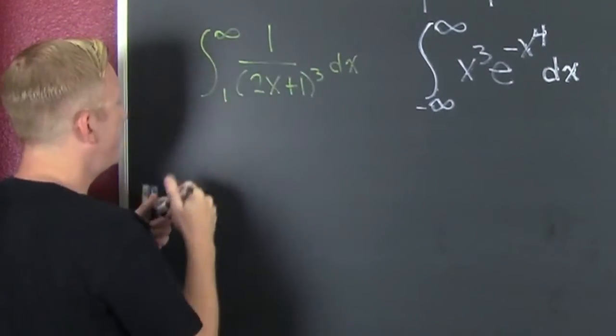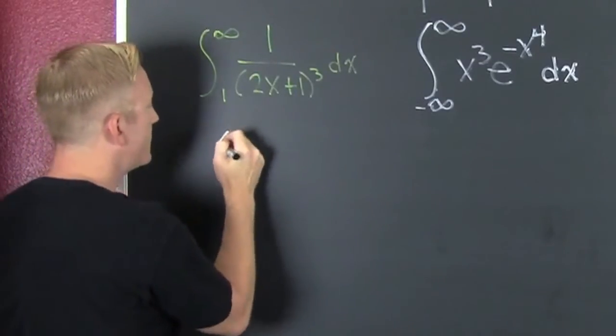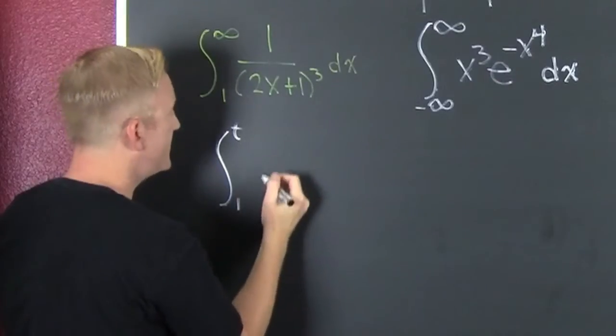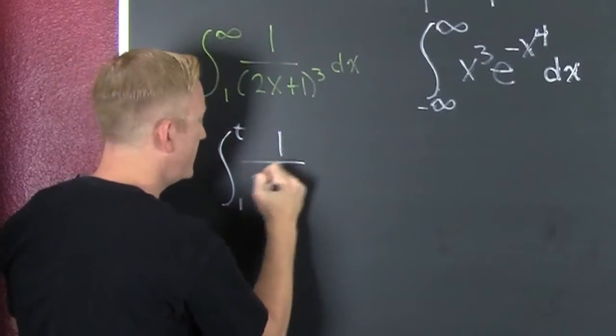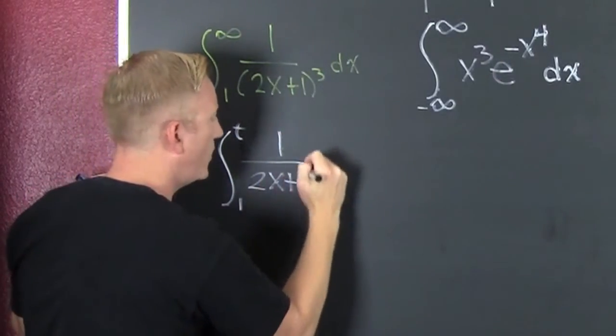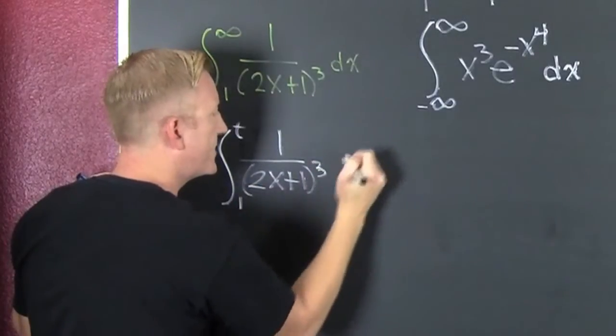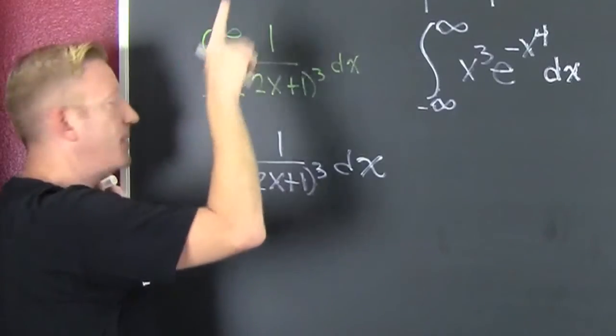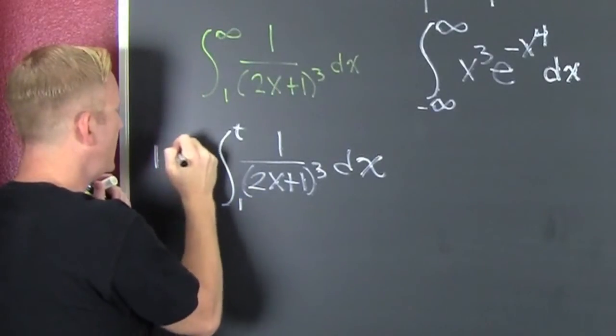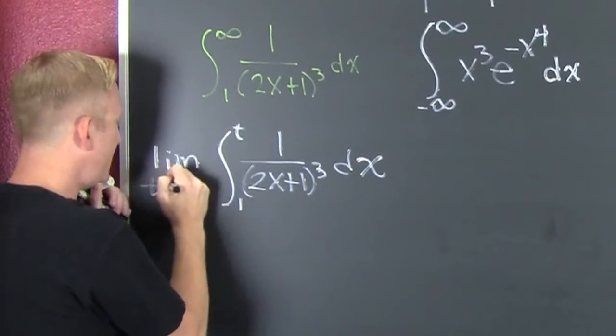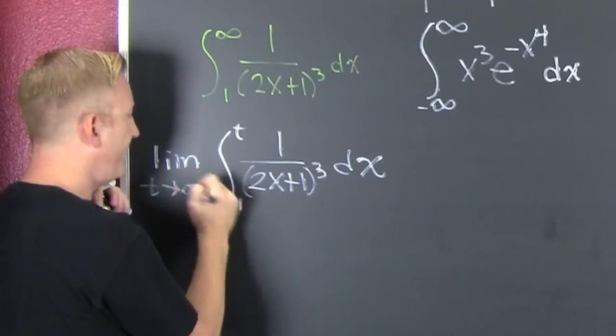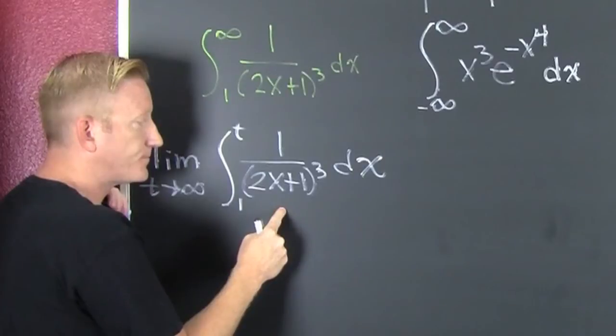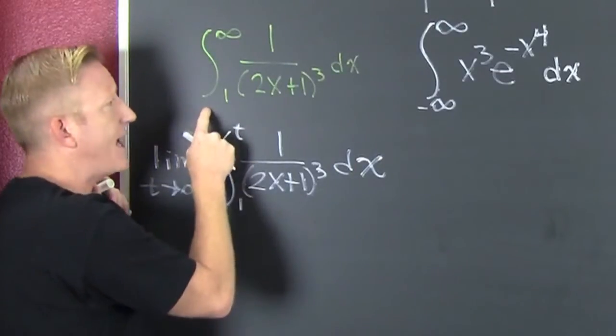I want to replace that infinity with something like t. So 1 to t, 1 over 2x plus 1, all of that to the third dx. But how am I going to get this one to be equivalent to that one? I'm going to run the limit as t goes to infinity after I integrate that guy. And that's how we handle that case.